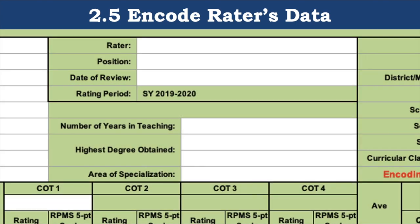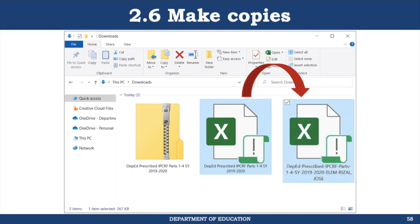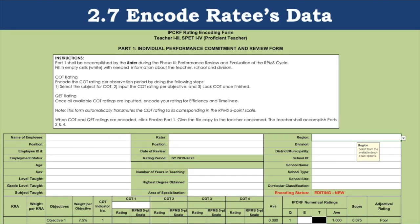After finishing encoding of the school's information and the rater's information, save the Excel workbook and close it. What we've done so far is basically make a template. The rater must prepare all the IPCRF files for each of the teachers he or she will be rating. Suppose I need to prepare the IPCRF tool for one teacher — I will duplicate the template and rename the duplicate to include the name of the ratee, then open that file. Don't forget to enable editing and enable macros every time you open the IPCRF tool.